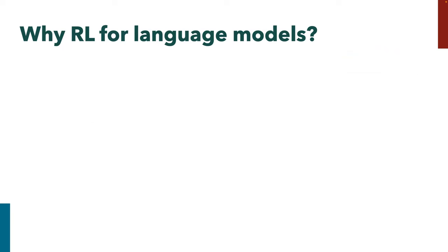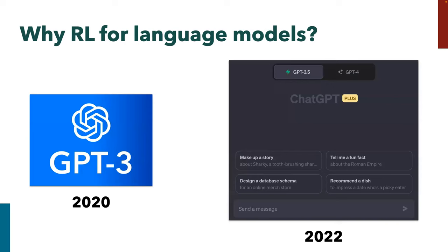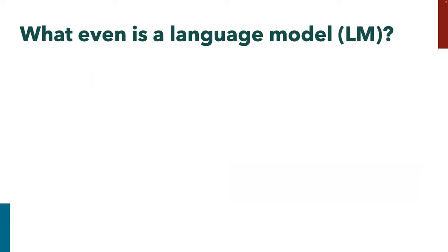If you're in this class you're probably familiar with reinforcement learning, and if you're a human being these days you've probably heard something about language models. But why are we talking about reinforcement learning for language models? GPT-3 was cool — your researcher friends were like 'whoa have you seen this new model' — then ChatGPT came around and your grandma was like 'have you seen this new model.' These are totally different levels of permeation in the public consciousness.